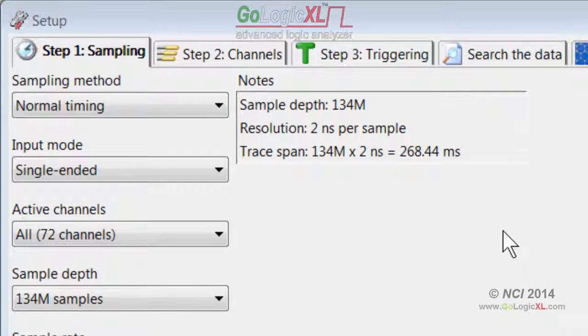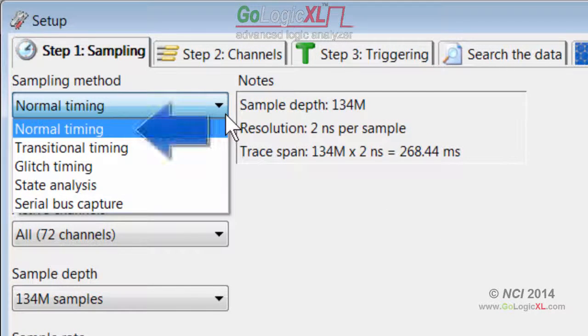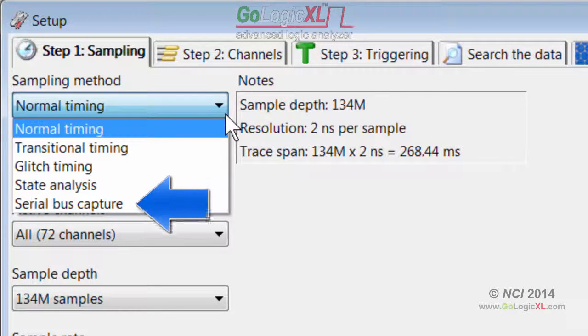The GoLogic XL supports five basic sampling modes. These are normal timing, transitional timing, glitch timing, serial bus capture, and state analysis.